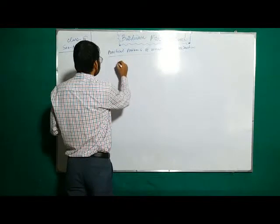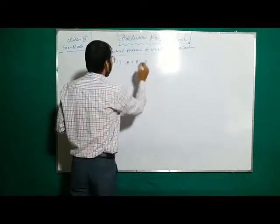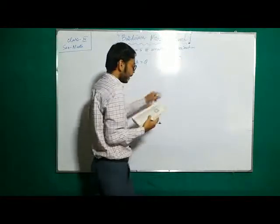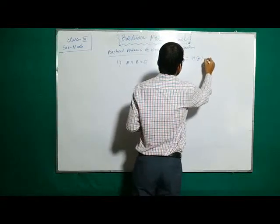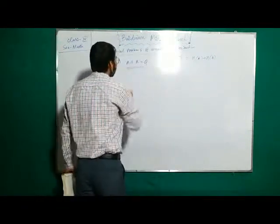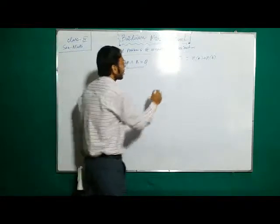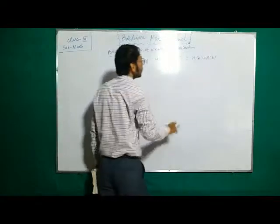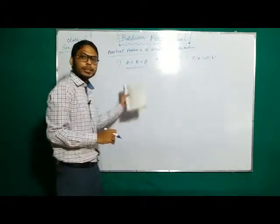Whenever A intersection B is phi, then n of A union B equals n of A plus n of B simply. Whenever A intersection B is phi — that means there is no common element of A and B — then the number of elements of A union B equals n of A plus n of B. This is the trivial case.